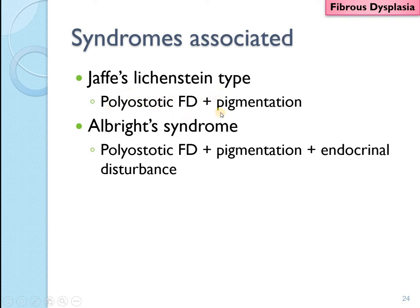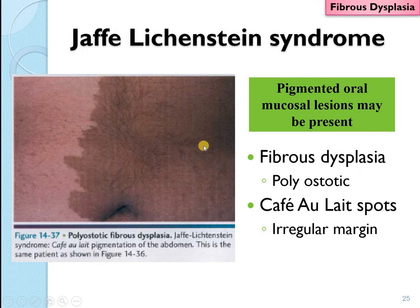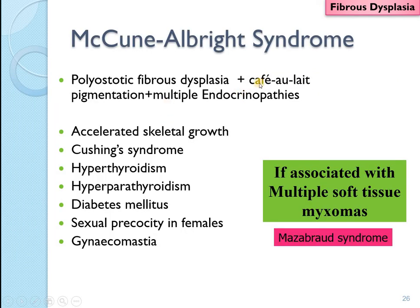The common syndromes associated are Jaffe-Lichtenstein syndrome and McCune-Albright syndrome. Jaffe-Lichtenstein syndrome involves polyostotic fibrous dysplasia with café au lait pigmentation. McCune-Albright syndrome is associated with café au lait pigmentation along with multiple endocrinopathies, which may include accelerated skeletal growth, Cushing syndrome, hyperthyroidism, hyperparathyroidism, diabetes mellitus, sexual precocity in females, and gynecomastia — involving growth hormone, adrenal, thyroid, parathyroid, pancreas, and sex hormones. If such a lesion presents with multiple soft tissue myxomas, that is called Mazabraud syndrome.